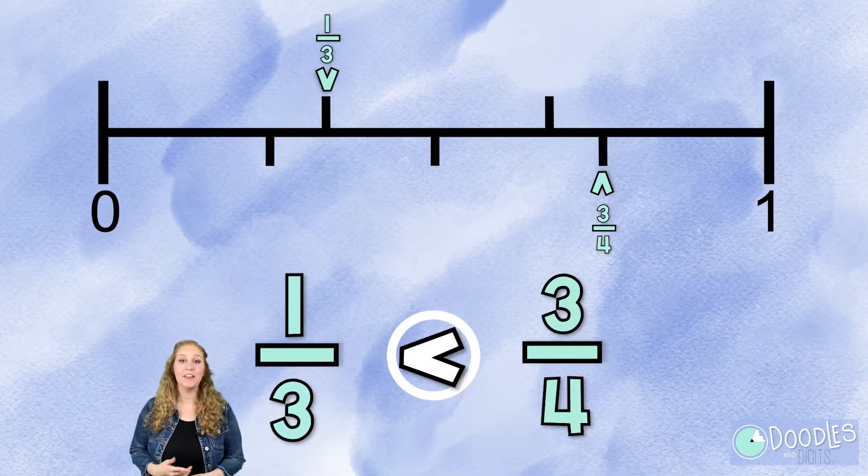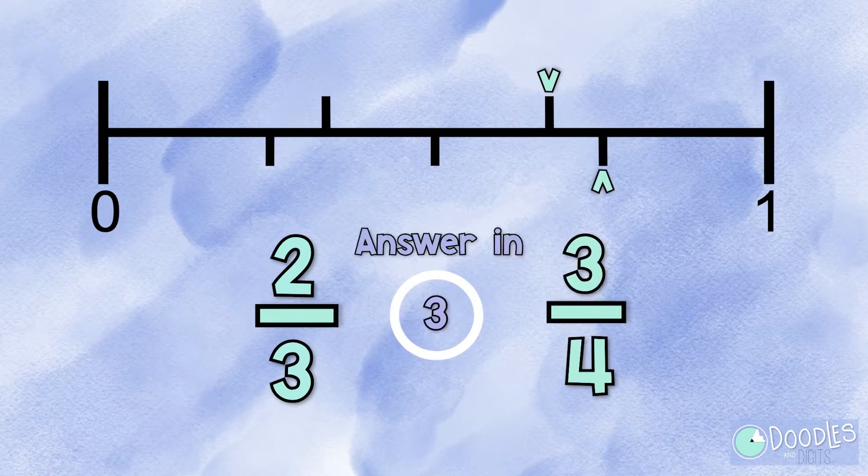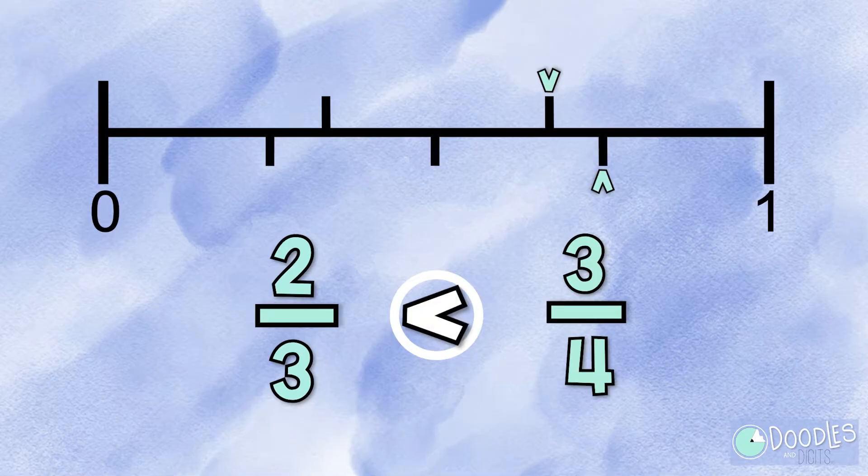All right, let's try another one. Let's compare these two fractions with the number line. Two-thirds and three-fourths. Two-thirds is less than three-fourths.